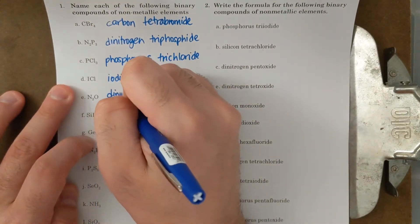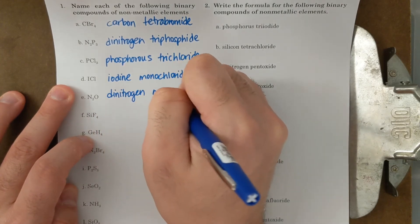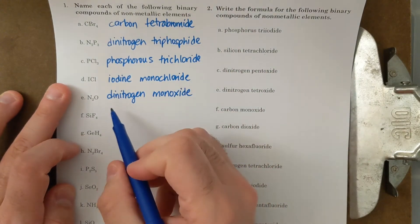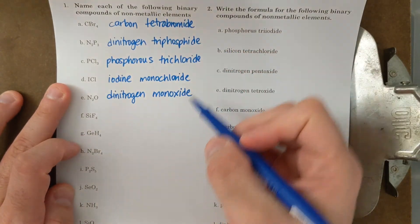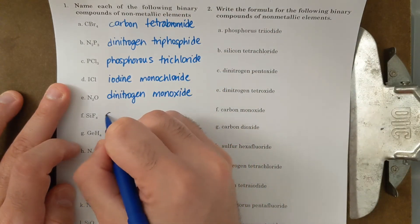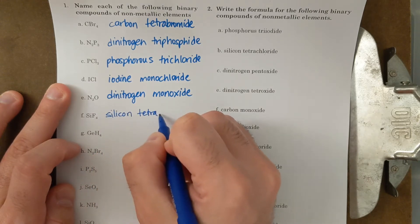N2O, dinitrogen monoxide. I need to put the mono on the second element in the compound. And I still have ide. For molecular compounds still ends in IDE. SiF4 is silicon tetrafluoride.